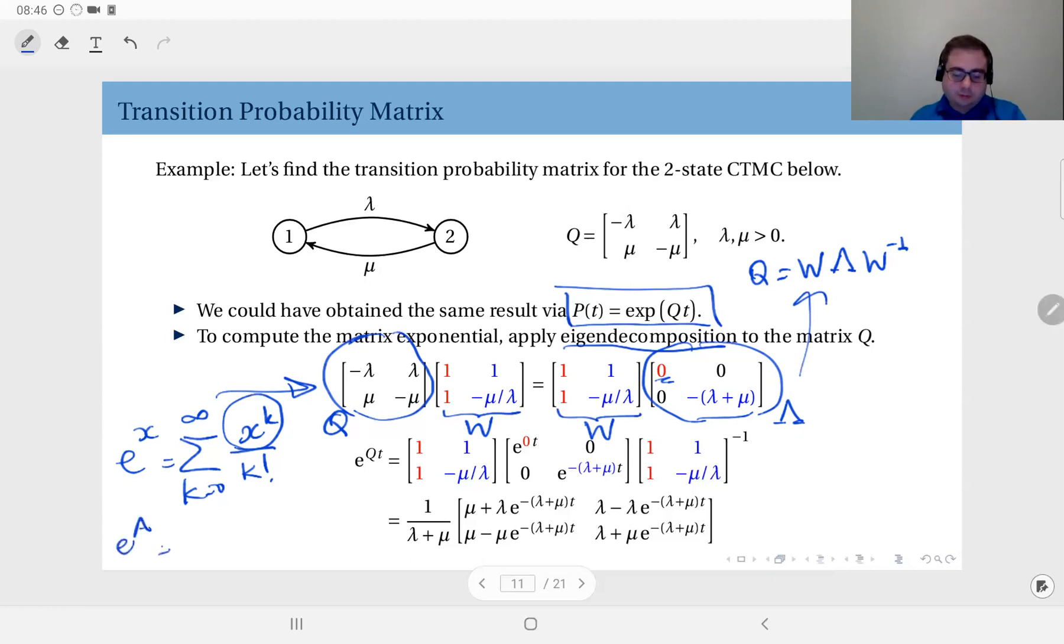So e to the power a, where a is a matrix, is also equal to k from zero to infinity, a to the power k divided by k factorial, where this is matrix power, where you multiply the matrix by itself, again and again, as usual.